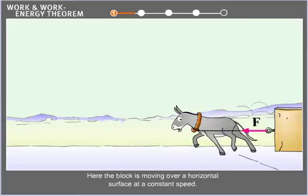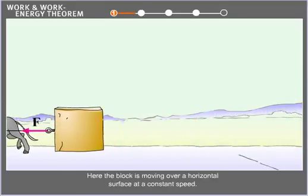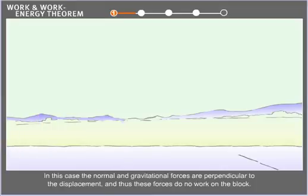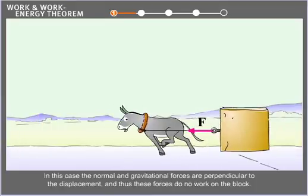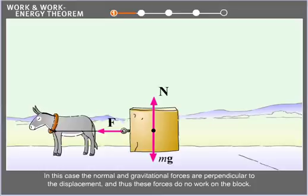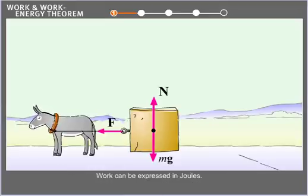Here, the block is moving over a horizontal surface at a constant speed. In this case, the normal and gravitational forces are perpendicular to the displacement, and thus, these forces do no work on the block. Work can be expressed in joules.